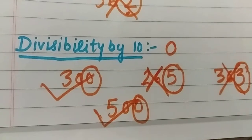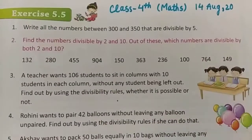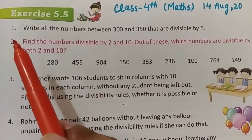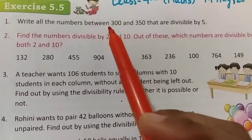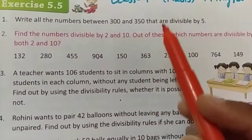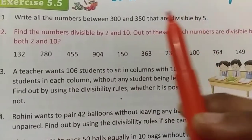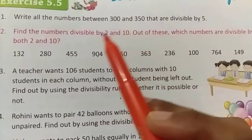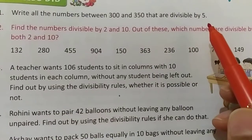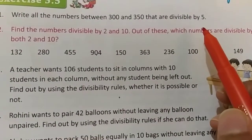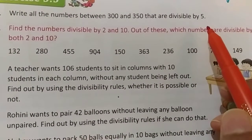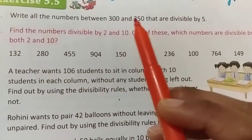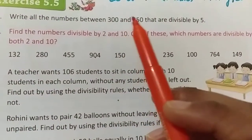I hope these 3 divisibility rules are clear. In exercise 5.5, the first question asks: write all the numbers between 300 and 350 that are divisible by 5. You have to write those numbers between 300 and 350 whose ones place digit is either 0 or 5.